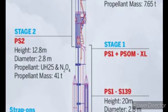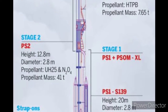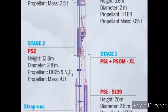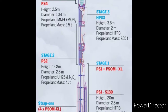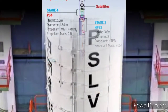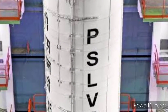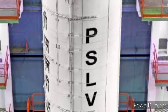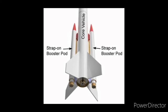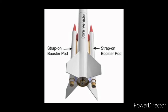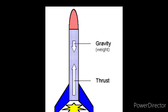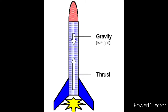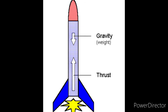The first stage uses solid fuel, the second stage uses liquid fuel, the third stage uses solid fuel, and the fourth stage uses liquid fuel. Other features of the PSLV include strap-on motors, which are used for additional thrust.